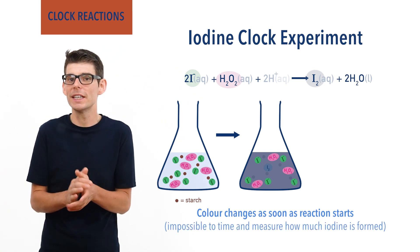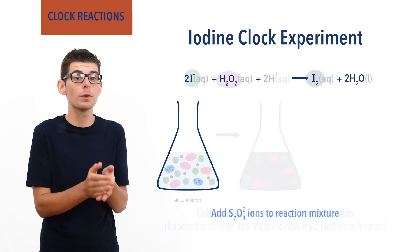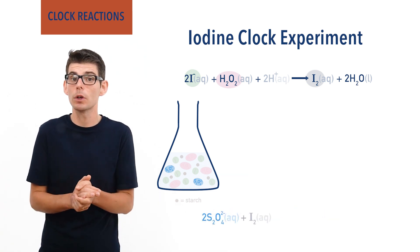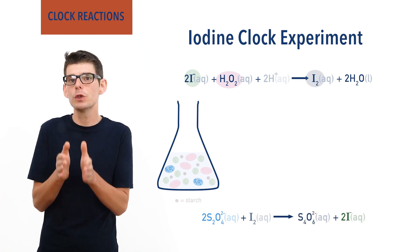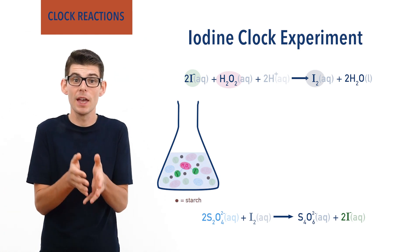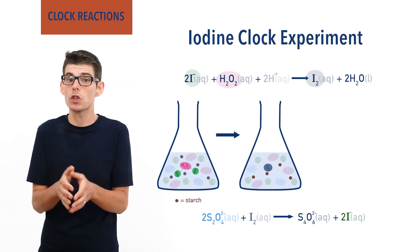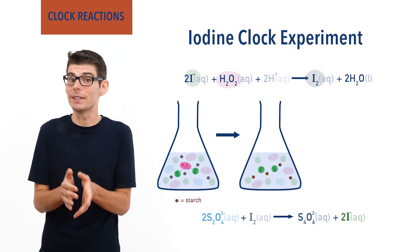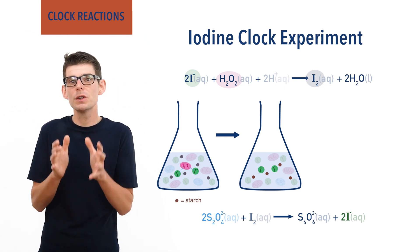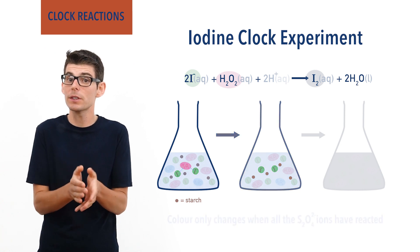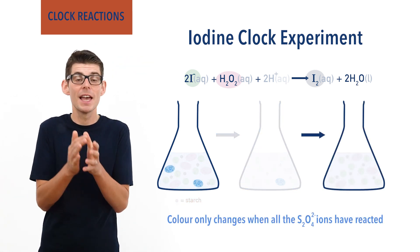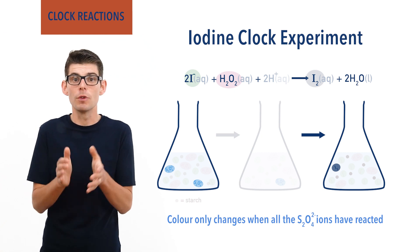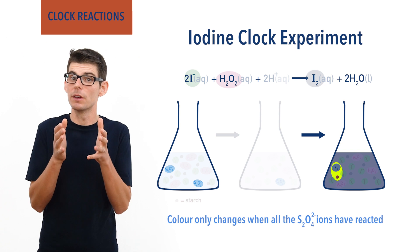To get around this, a small quantity of thiosulfate ions are added to the reaction mixture alongside the starch indicator. This is because thiosulfate ions react with iodine molecules to form iodide ions. Now, as soon as iodide ions and hydrogen peroxide molecules react together and iodine molecules form, the iodine molecules in the mixture will instantly react with the thiosulfate ions present, forming iodide ions. This means the starch indicator doesn't get a chance to change colour. The solution will only change colour when all the thiosulfate ions present have reacted. As soon as that point occurs, any iodine molecules now formed from the main reaction between iodide ions and hydrogen peroxide remain in the solution — and bang — the starch indicator turns a dark blue-black colour.